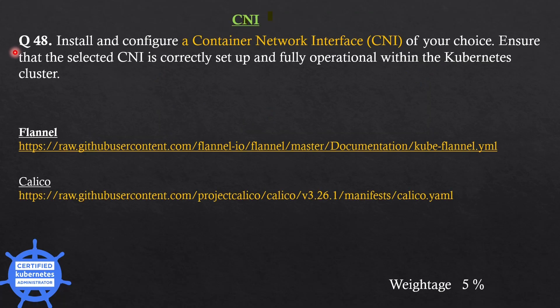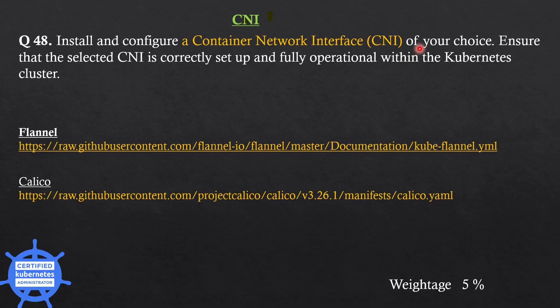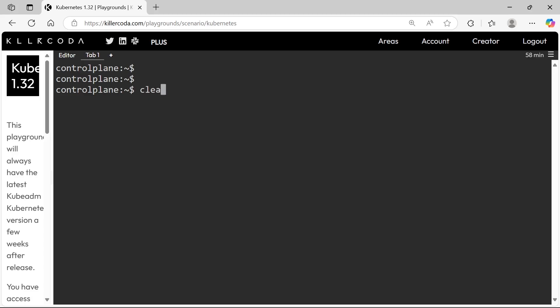The next question is: install and configure a container network interface of your choice. Ensure that the selected CNI is correctly set up and fully operational within the Kubernetes cluster. The links are given below. So we have a choice here to install either Flannel or Calico. Let's move to the cluster.